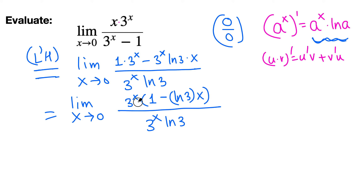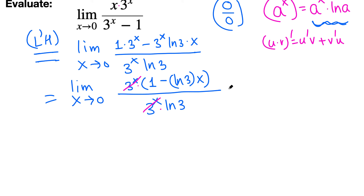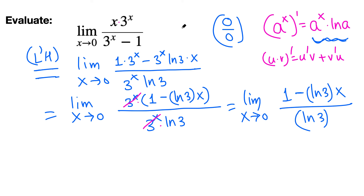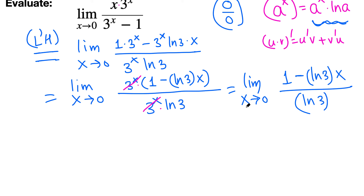Now we have 3^x times everything on top and 3^x on the bottom, so we can cancel them. We could not cancel before because they were in a difference, but after factoring we can cancel. That leaves the limit as x goes to 0 of 1 minus ln 3 times x, all over ln 3. We cannot cancel the ln 3 terms because of the minus sign, but plugging in 0 won't give us 0 over 0, so we're done simplifying.